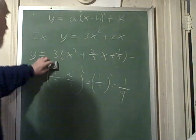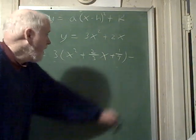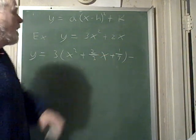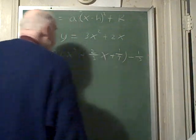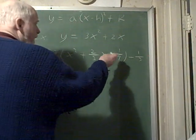have to ask myself what number did I really add. I really added 3 times 1 ninth, which is 1 third. So I have to subtract 1 third. You've got to be fair—if you add something, you have to subtract it.